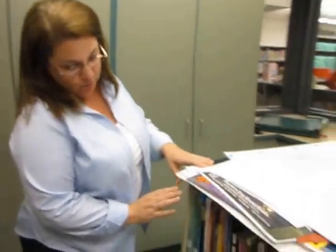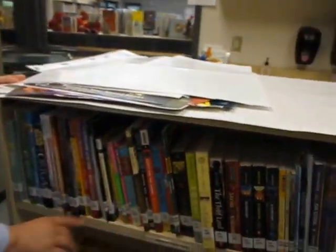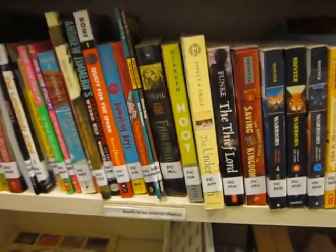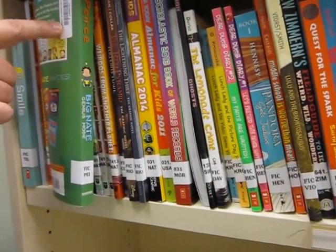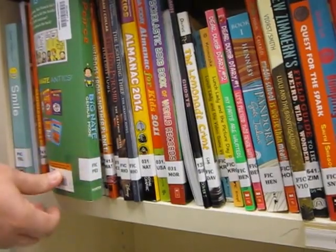Over here on the cart, we have our shelf of paperback books that are ready to be covered. They have the call number and the barcode on the back. They need to have both of those things in order to be covered.